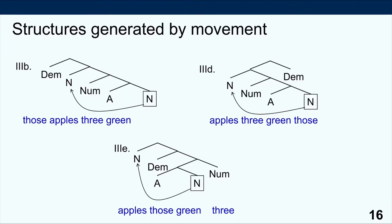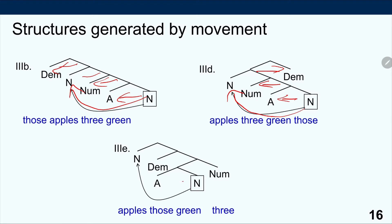To get order 3b: combine noun and adjective putting adjective to the left, put the numeral to the left, then move the noun up, and then put the demonstrative on top of that. The counterintuitive new thing here is that we do the movement first and then add the demonstrative. To get order 3d: put the adjective to the left, numeral to the left, move the noun up, put the demonstrative on top — but this time put the demonstrative to the right. We get the order noun-num-adj-dem. To get order 3a again: put the adjective to the left, then the numeral to the right, the demonstrative to the left, and the last step is to move the noun to the top, giving noun-dem-adj-num.